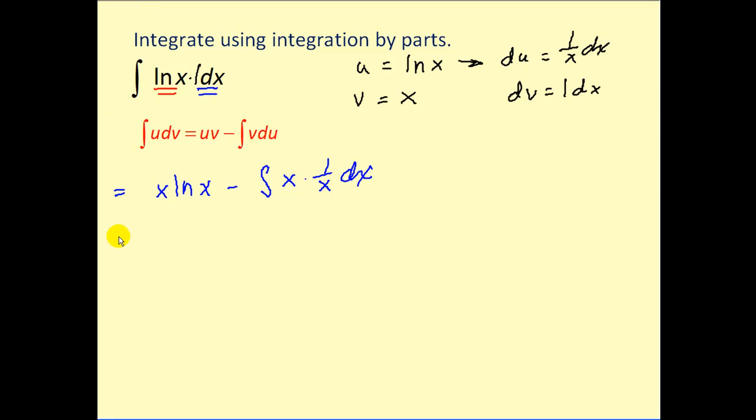Again, this simplifies. x times one over x would just give us one. And as we stated earlier, the antiderivative of one with respect to x would just be x and then of course our plus c.